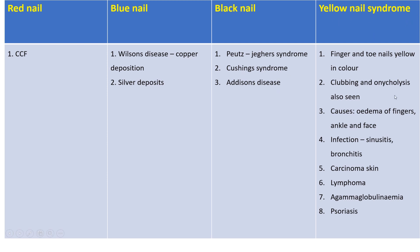Yellow nail syndrome presents with yellow-colored finger and toenails, along with clubbing and ankle edema. Causes include edema of fingers, ankles, and face; infections like sinusitis and bronchitis; carcinoma of the skin; lymphoma; agammaglobulinemia; and psoriasis.